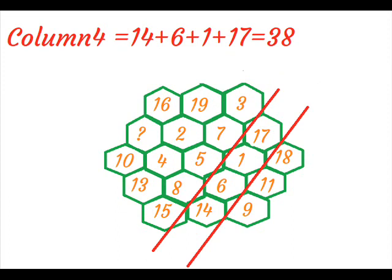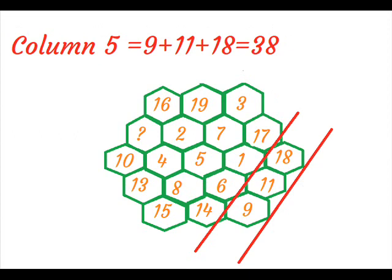On adding column 4, we get 14 plus 6 plus 1 plus 17 is equal to 38. On adding column 5, we get 9 plus 11 plus 18 is equal to 38.